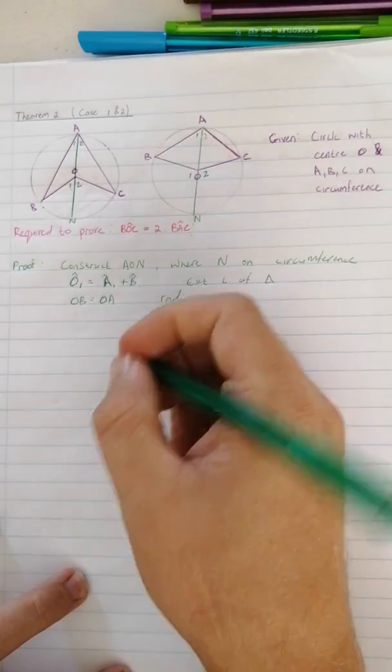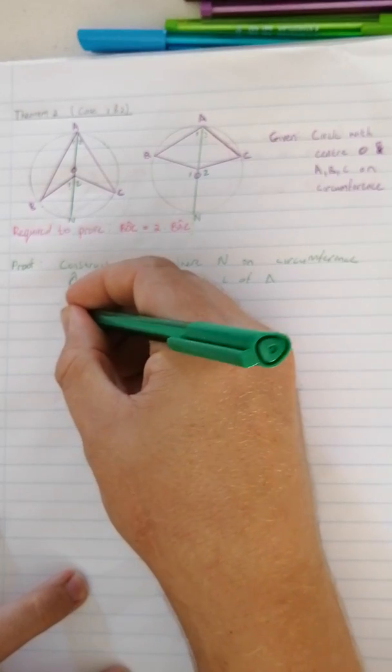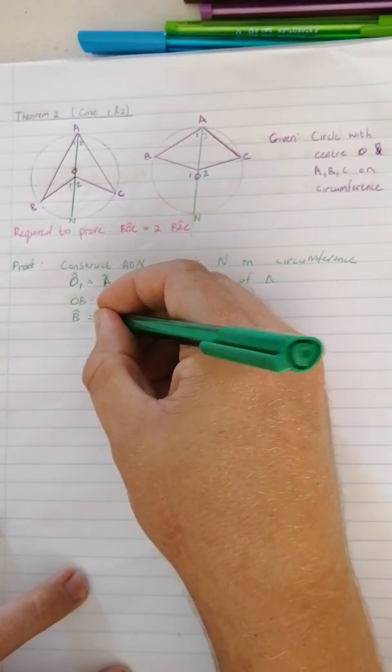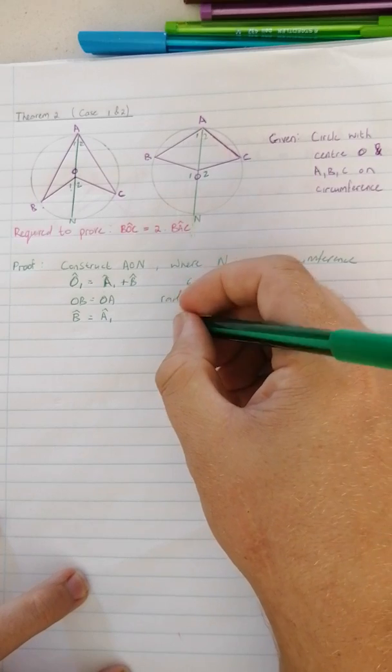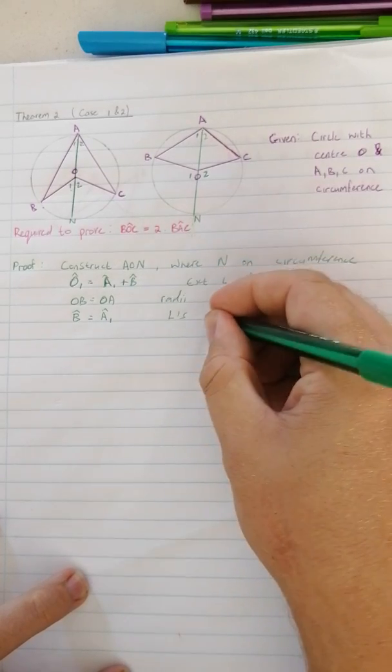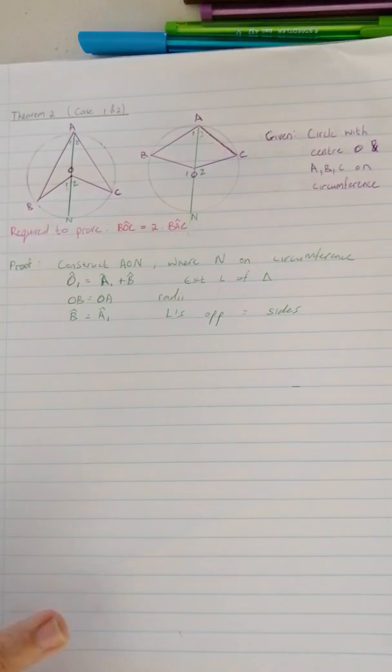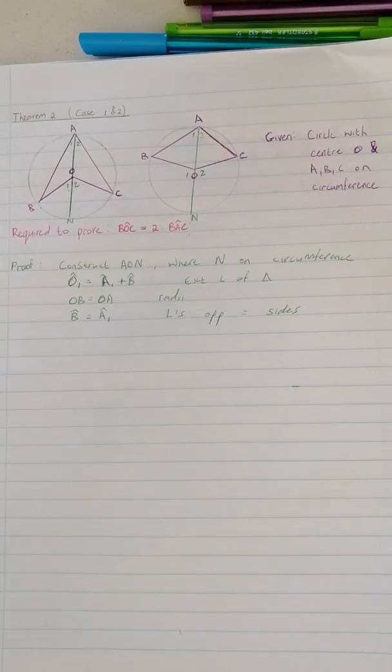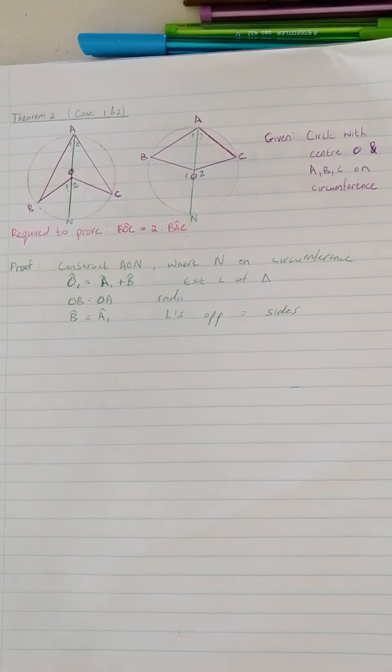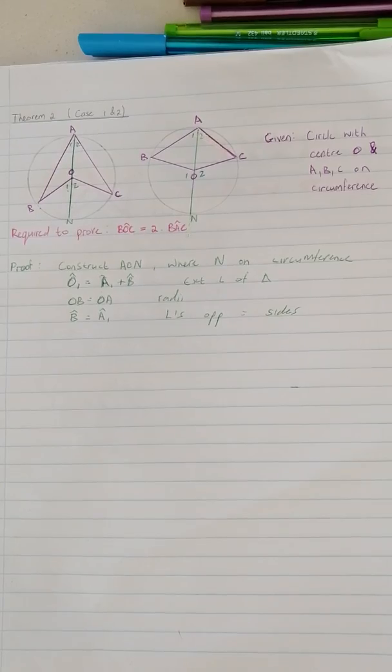And then from there we can say that B equals A1. Why? Angles opposite equal sides. That's the same as saying isosceles triangle, but we don't use the reason isosceles triangle in geometry.